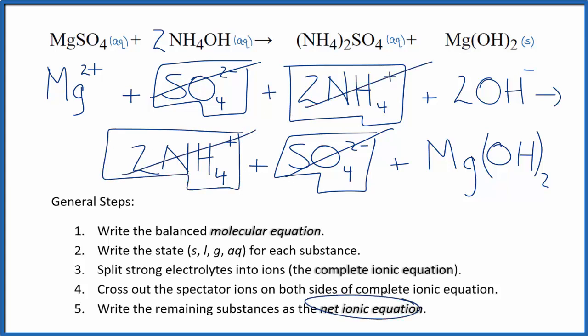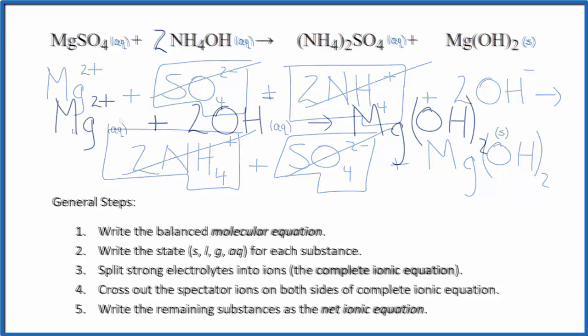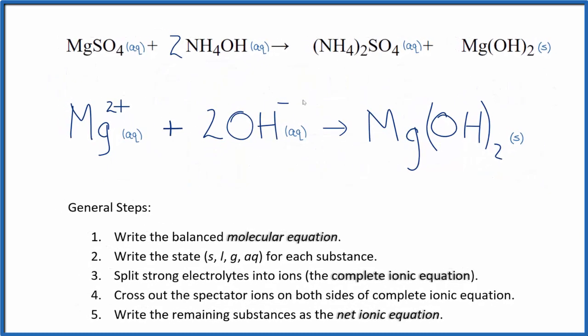What's left gives us the net ionic equation for MgSO4 plus NH4OH. I'll clean this up and write the states. We'll have our net ionic equation. So this is our balanced net ionic equation.